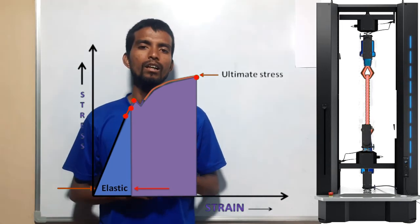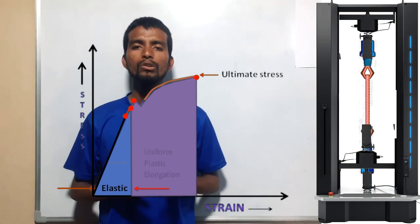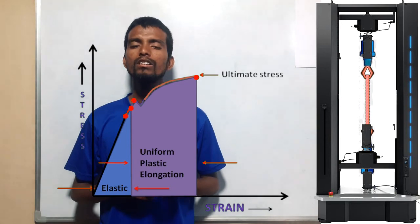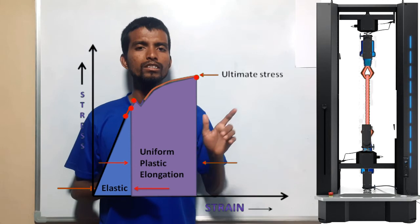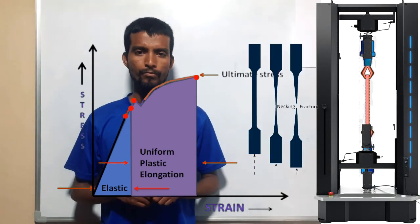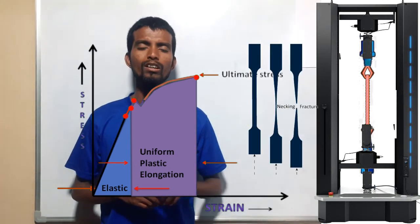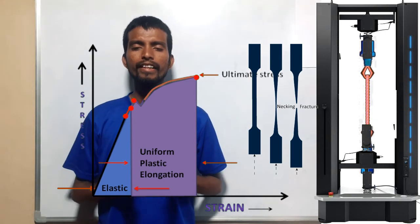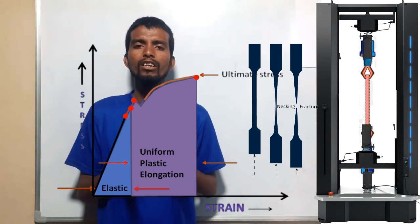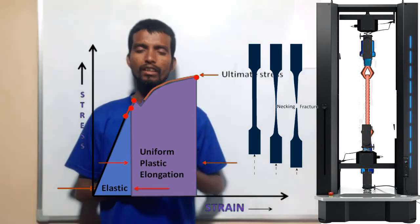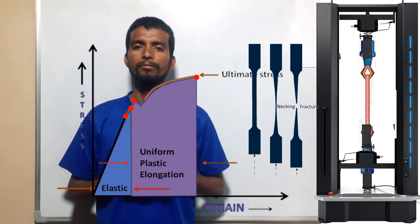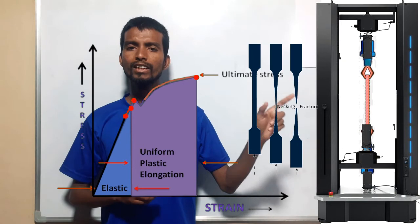After the ultimate stress point, the member starts necking. You can see in this image what actually necking is. Necking is a sudden change in cross-sectional area of any member. By this figure, there is a sudden change in cross-sectional area, and this type of area is known as necking.